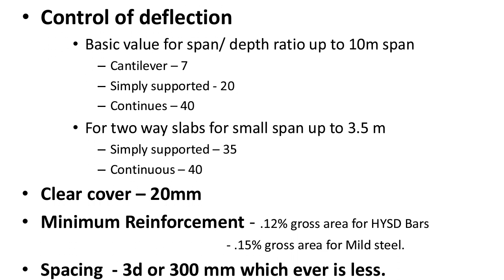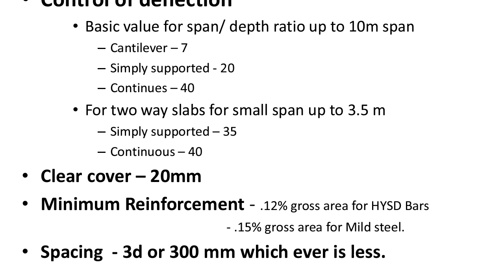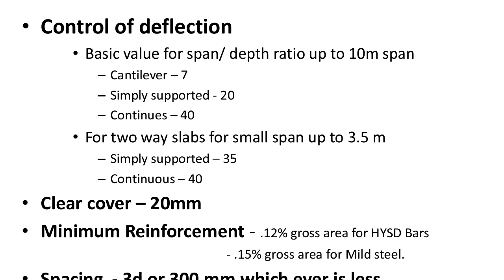The span-to-depth ratio is very important for finding the depth of the slab. For two-way slabs of small span up to 3.5 meters: simply supported has a span-to-depth ratio of 35, and continuous has 40. Please remember these values, as they may be asked in competitive examinations and GATE examinations.